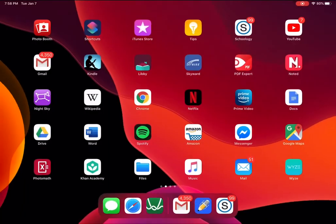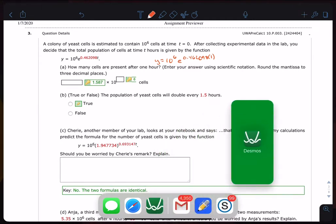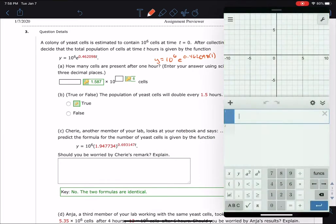So the easy way to do it is to pull up Desmos off to the side and type in 10 to the 6th times e.